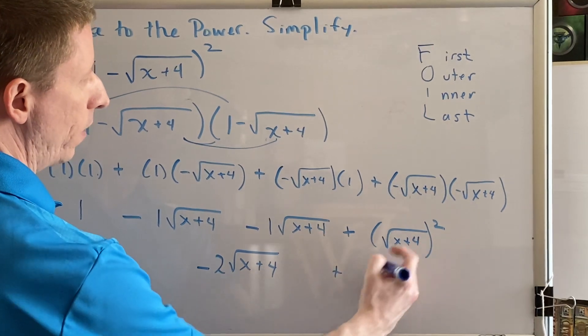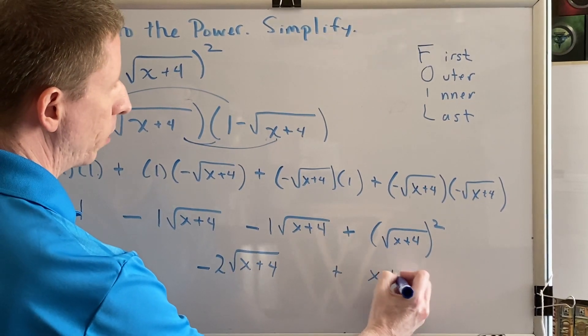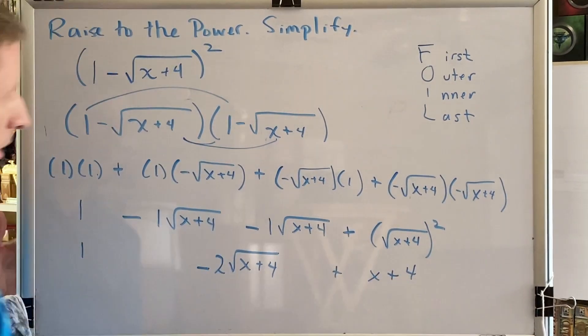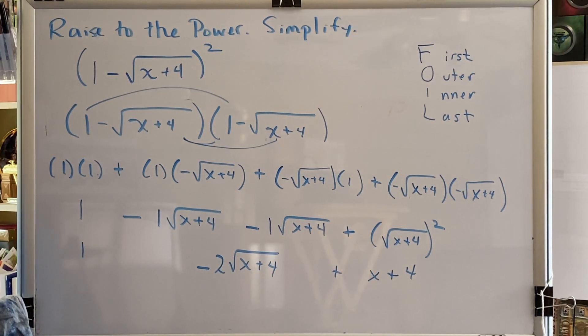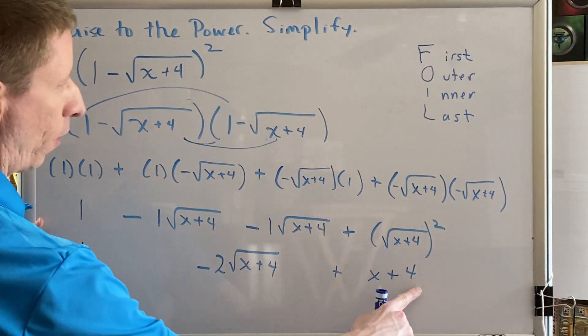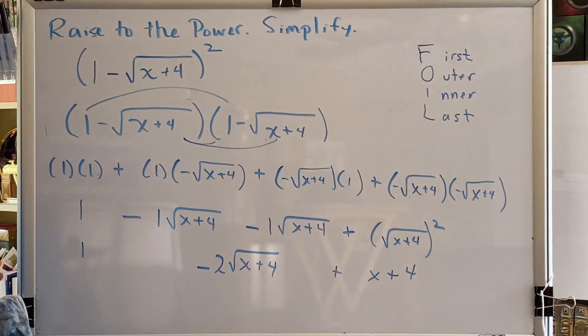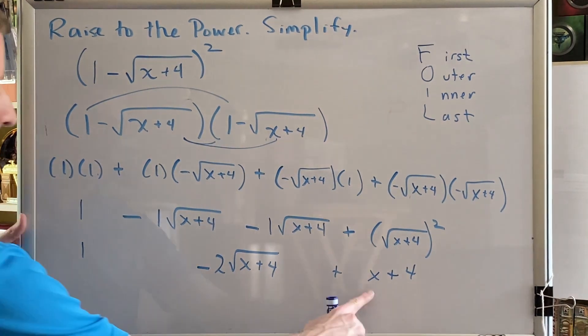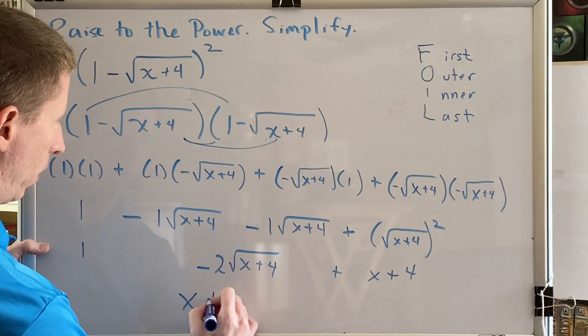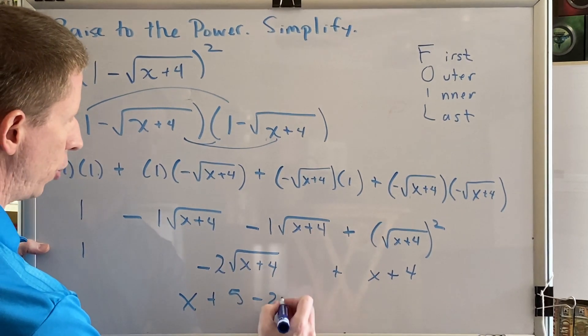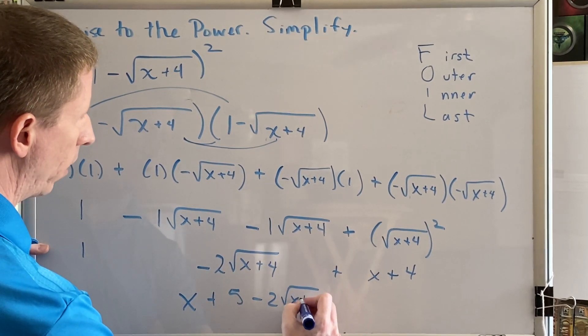And here at the end, the square and the square root cancel, leaving us x plus 4. Now combine your like terms. We've got a number 1 and a number 4. Those are the only like terms. Those are going to make 5. So we have this x, the 5, and then minus 2 square root of x plus 4.